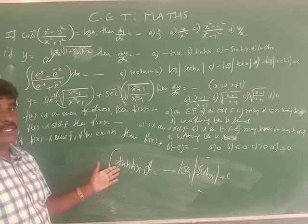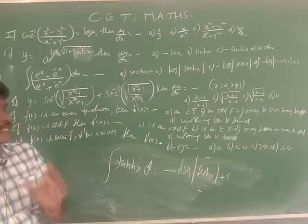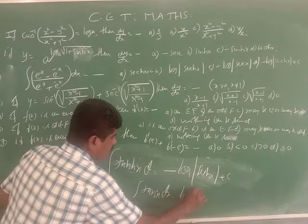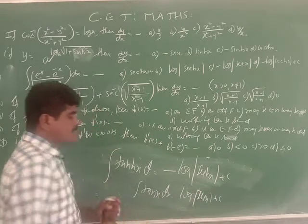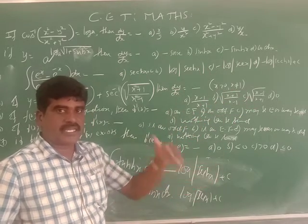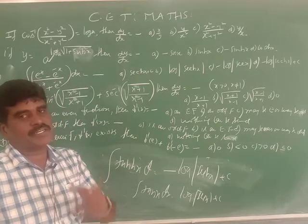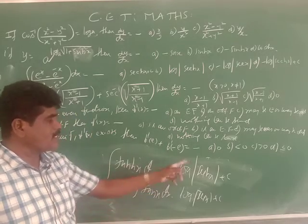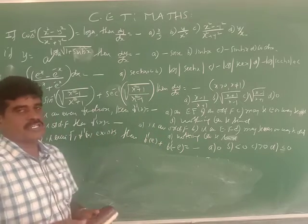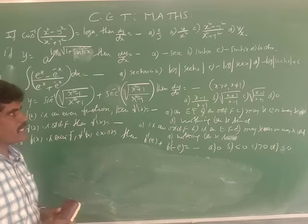Just as the integration of tan x is log(sec x), the integration of tanh x is −log(sech x) + c. This is confirmed because the derivative of sech x is −sech x · tanh x, making integration the reverse process of differentiation. Option D is the answer: −log(sech x) + c.